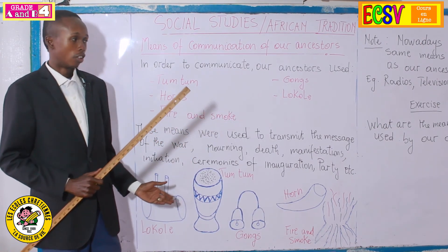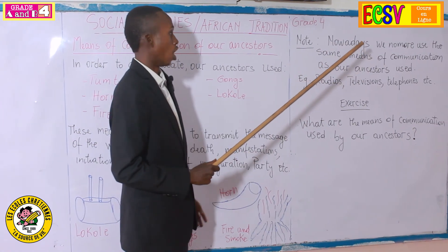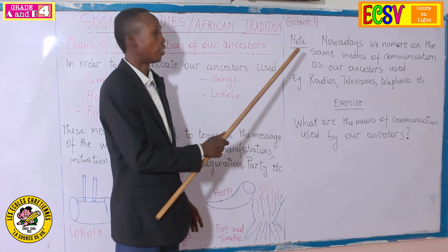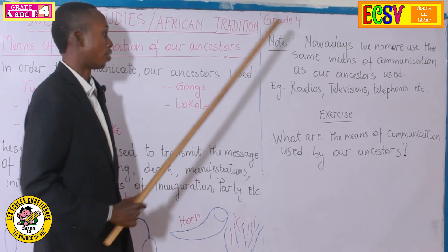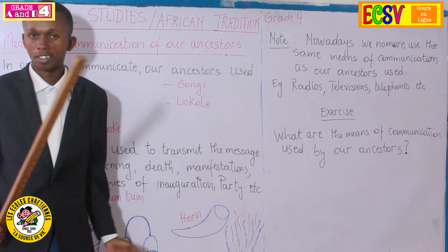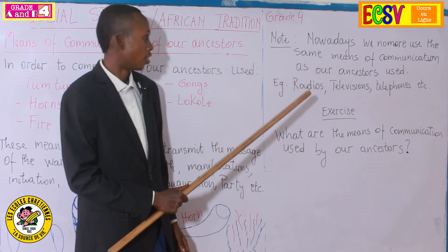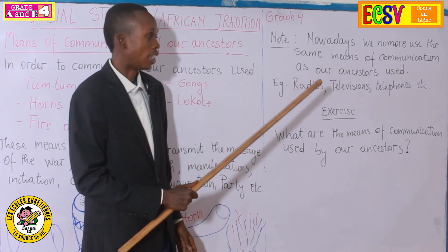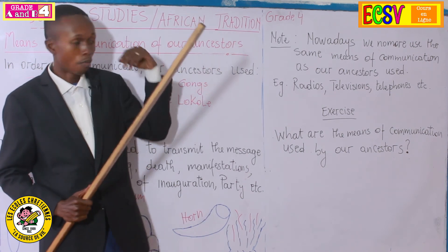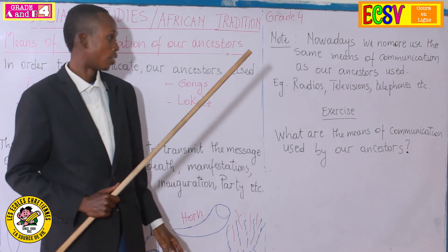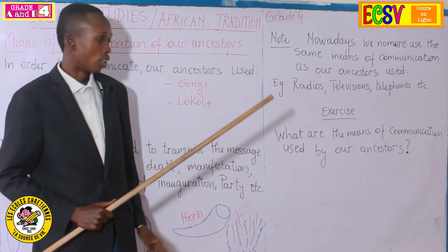Note: nowadays, we don't normally use the same means of communication as our ancestors used. Because nowadays we use radios, televisions, telephones, and so on. But in that time, they couldn't use those things — they just used what I have drawn here. Exercise: what are the means of communication used by our ancestors?